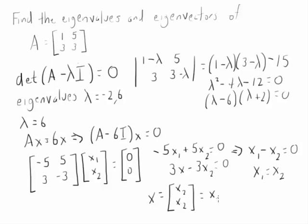We factor out an X2, and you can turn that into 1, 1. That vector right there is our eigenvector — the eigenvector corresponding to 6.